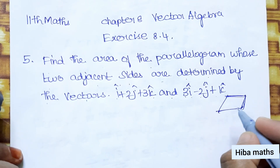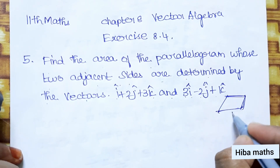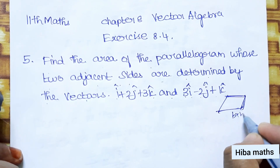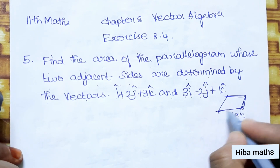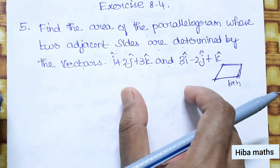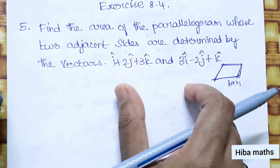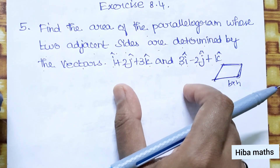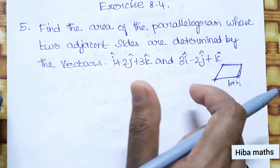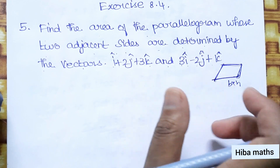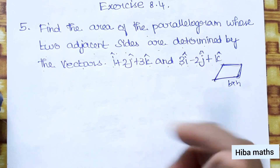The area of a parallelogram is base into height. When adjacent sides are given as vectors, we use the cross product method — set up the matrix and take the modulus of the result.